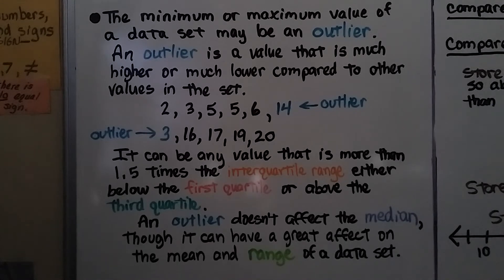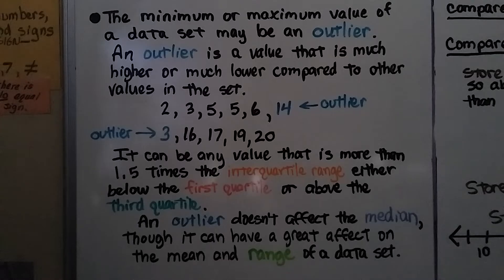So if our set of data is 2, 3, 5, 5, 6, and then a 14, that 14 is an outlier. It's much higher than the rest of the numbers.